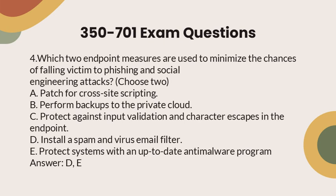Question 4: Which two endpoint measures are used to minimize the chances of falling victim to phishing and social engineering attacks? Choose two. a. Patch for cross-site scripting. b. Perform backups to the private cloud. c. Protect against input validation and character escapes in the endpoint. d. Install a spam and virus email filter. e. Protect systems with an up-to-date anti-malware program. Answer: D, E.